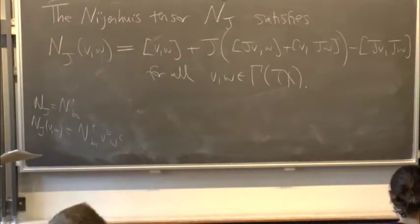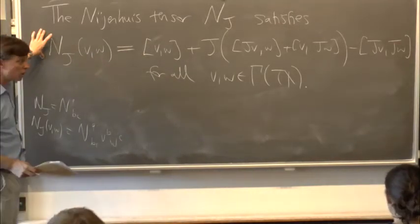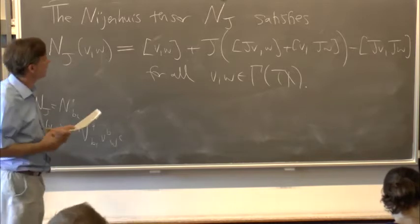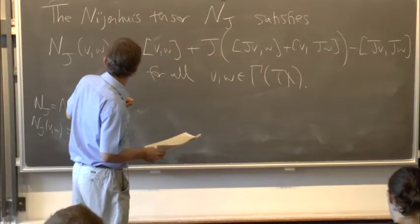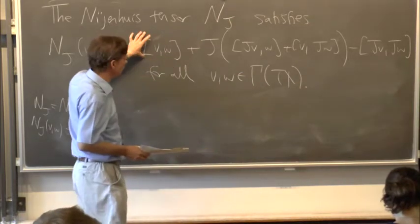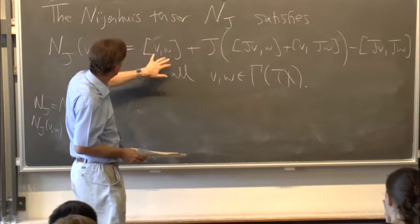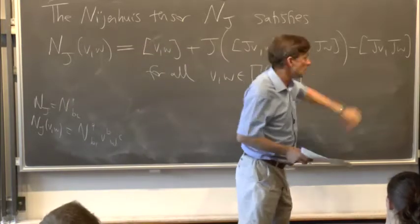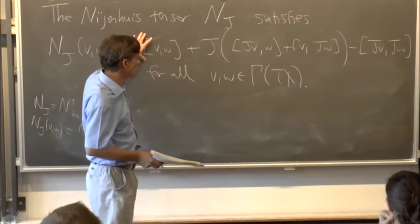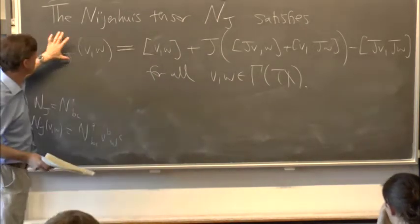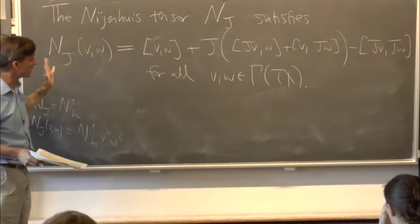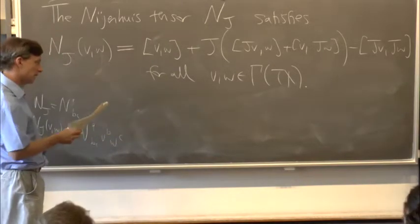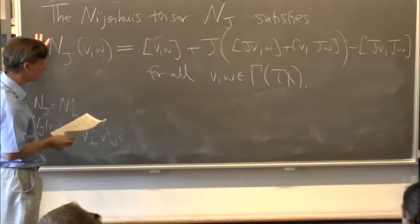This looks quite like the characterising property of the curvature and of the torsion of connections. The right-hand side involves derivatives of V and W — each Lie bracket involves either one derivative of V or one derivative of W. But all the derivatives of V and W on the right-hand side cancel out, so the left-hand side is pointwise linear in V and W and doesn't involve any derivatives.